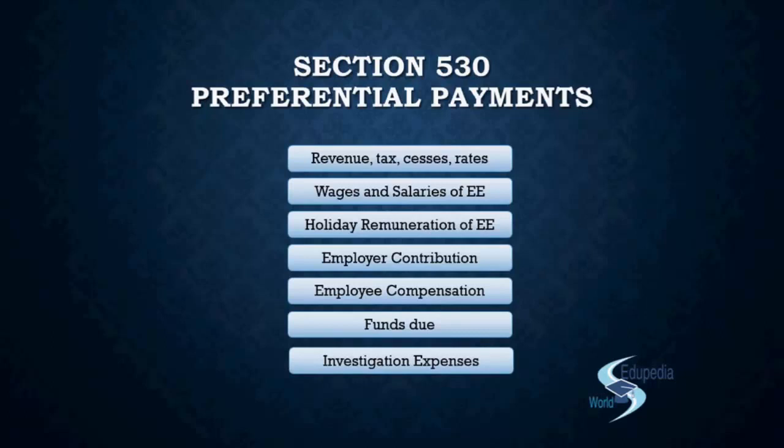When the Companies Act 1956 came into play, they identified these people to be in priority — they wanted them to be paid first. Then when you have the surplus, you go on to pay the unsecured creditors and everything else. These people need to be paid in priority — they have their right. That is what the Companies Act 1956 initially came up with.